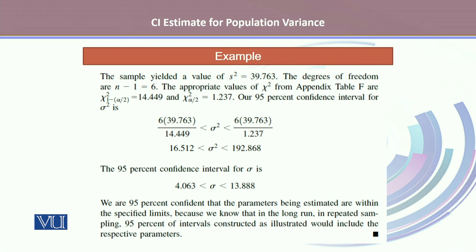The first value, chi-square 1-α/2, is 14.449, and chi-square α/2 is 1.237. Hence our 95% confidence interval for sigma squared will be obtained by putting all these given values into the expression stated earlier.